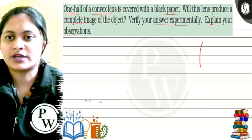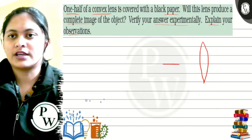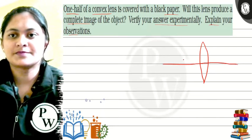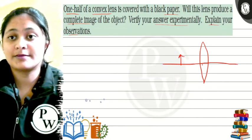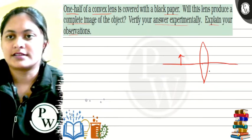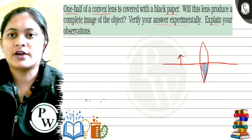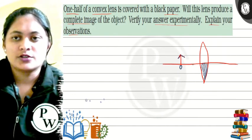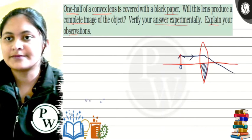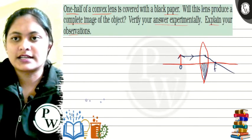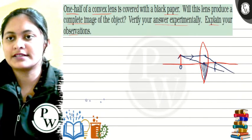We have taken a convex lens and this is the principal axis. Suppose this is our object, and we put the black paper here. We will go parallel here, pass the focus here, and if we pass the optical center from here, we will form an image of the object.